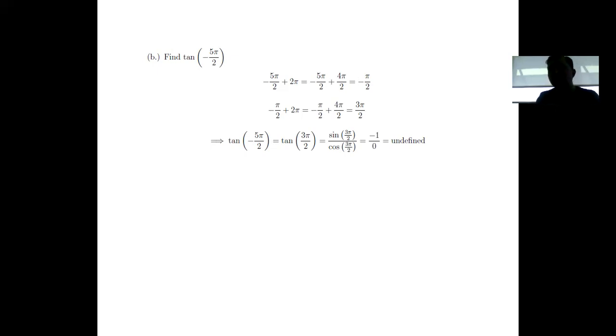So, tangent of 3π over 2 is the same as sine of 3π over 2 divided by cosine of 3π over 2. And the coordinate pair associated with 3π over 2, again, is 0, negative 1. So, sine will grab that y-coordinate of negative 1, and cosine will grab that x-coordinate of 0, and we'll have negative 1 over 0, which is undefined.